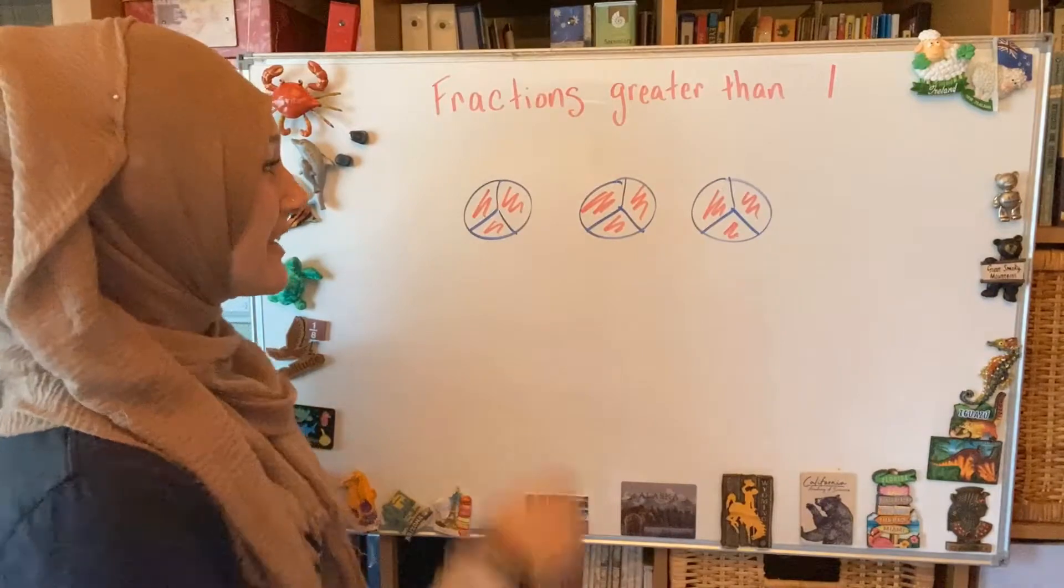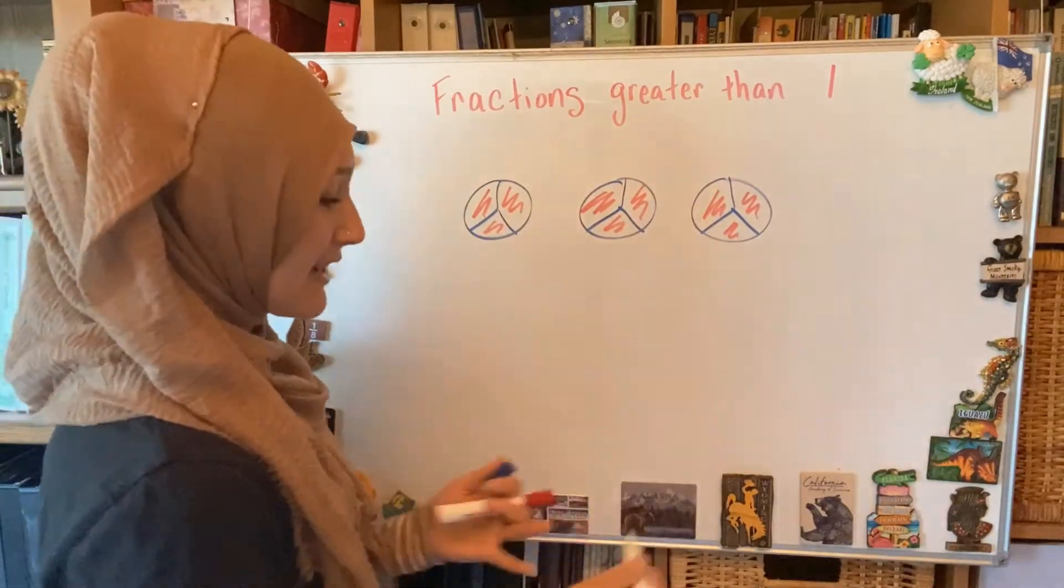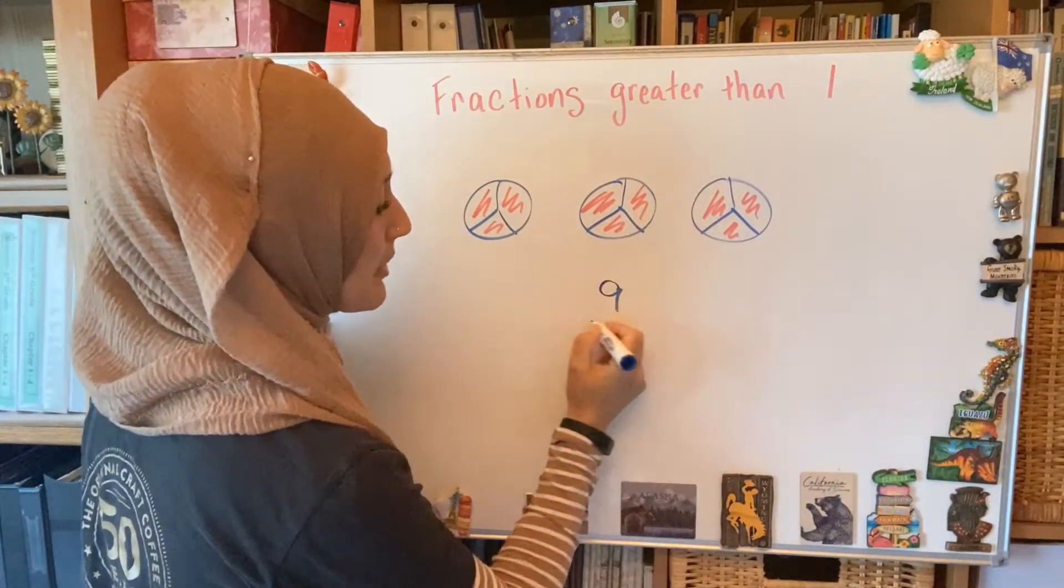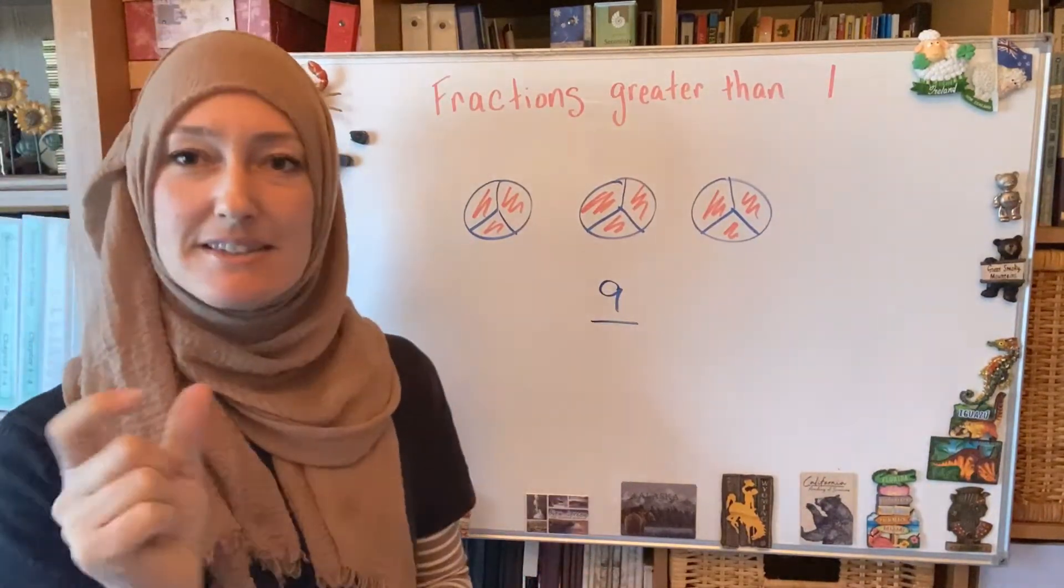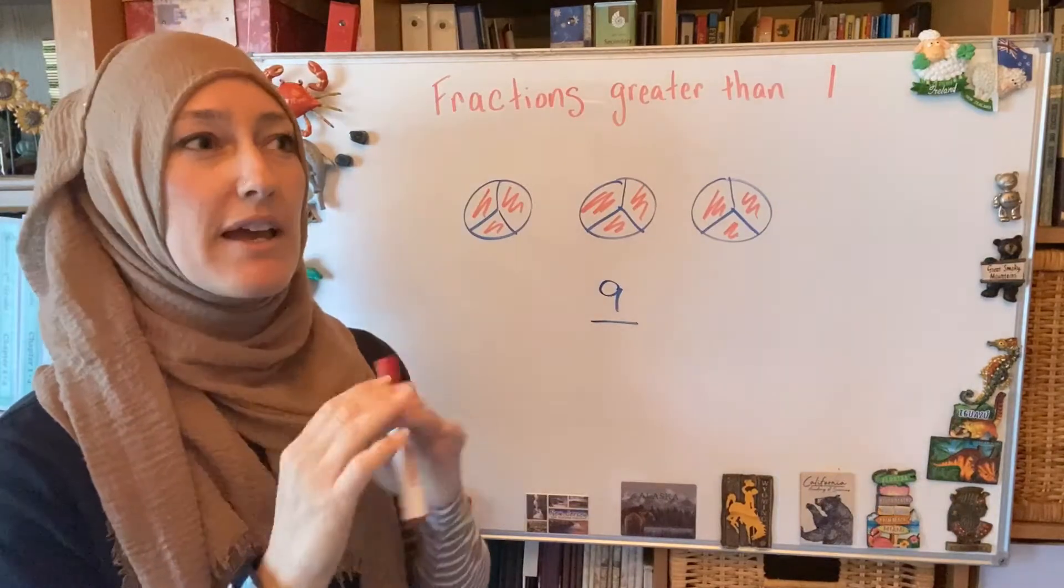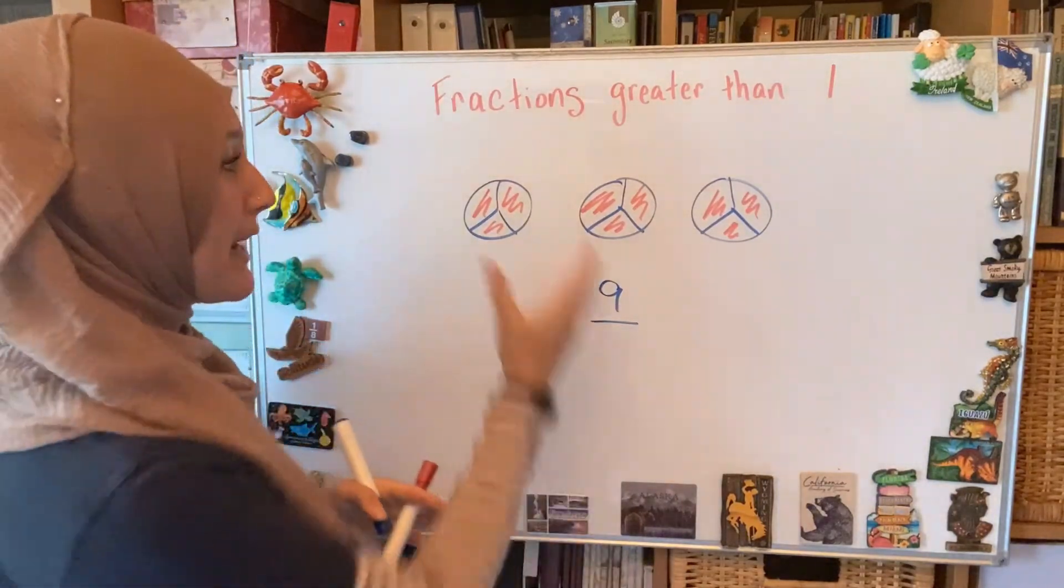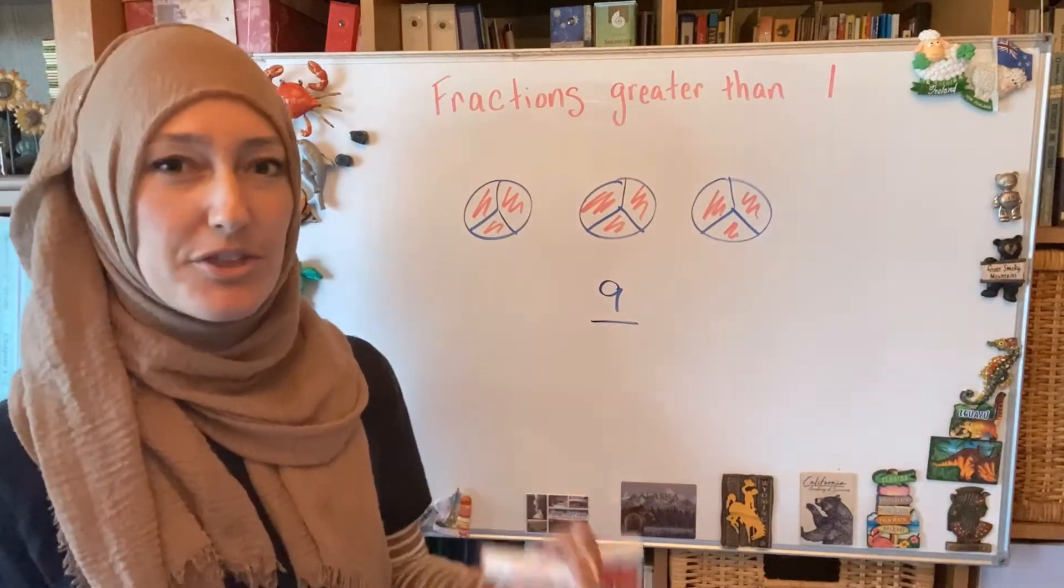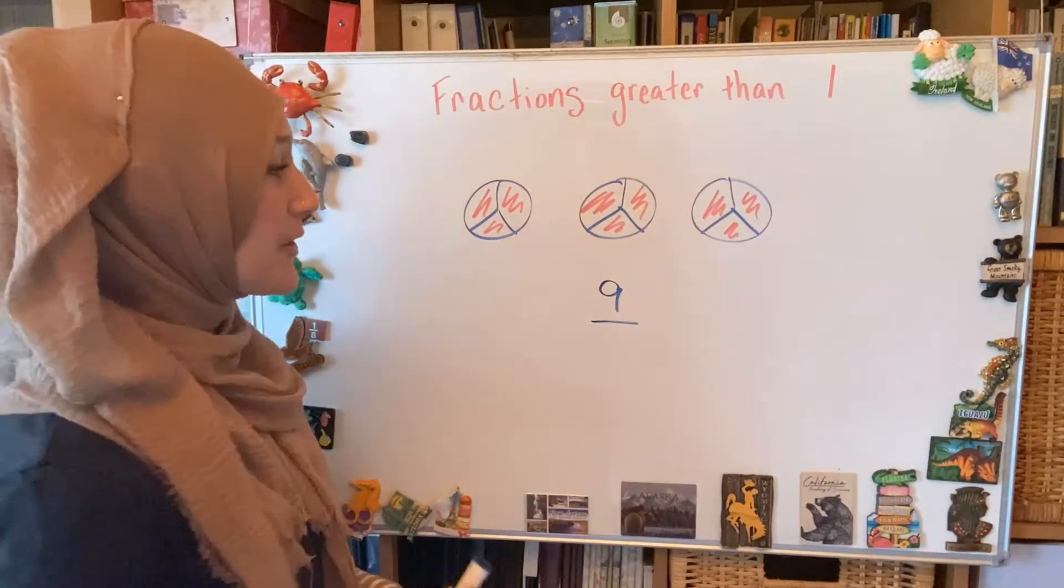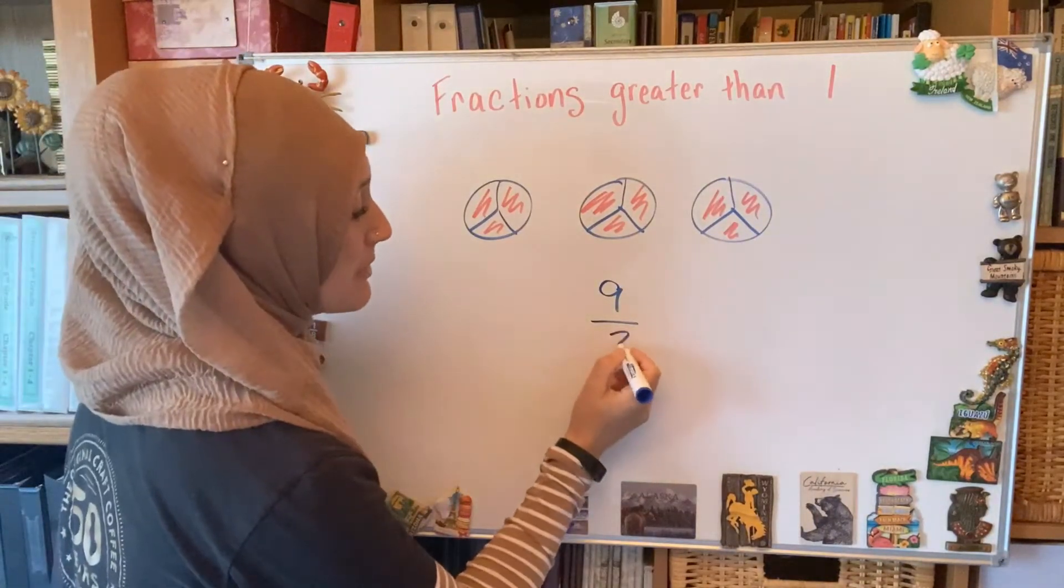How many parts are shaded? Three, six, nine. So my numerator is nine parts. The top number is what we're talking about. The bottom number is the size of the part, or how is it cut up? So I go back to one of them. It's cut into three pieces, so it's a third-sized part. So my denominator is going to be three.